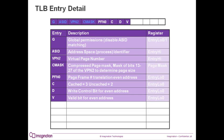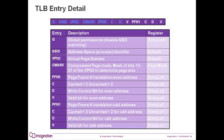The VBIT will determine if the entry is valid and usable. If it is not set, the entry will not be used. This bit should be cleared at boot time during the TLB initialization. The VBIT is stored in the entry low 0 register. The next group of information is the same as for PFN0 except it is for the odd physical page translation and uses the entry low 1 register.